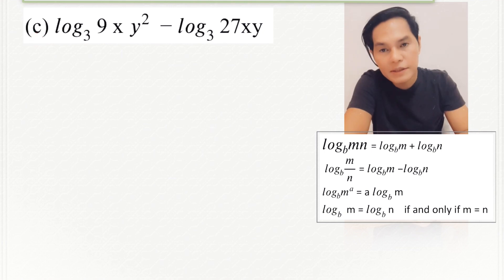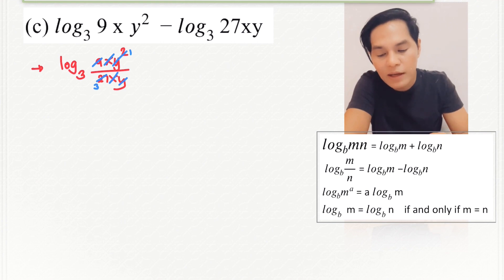Okay, for letter C, look at this. This is subtraction, so we are going to divide these two expressions here. Therefore, we now have 9xy squared over 27xy. We cancel the common factors and the remaining there is the log of y over 3 to the base 3.